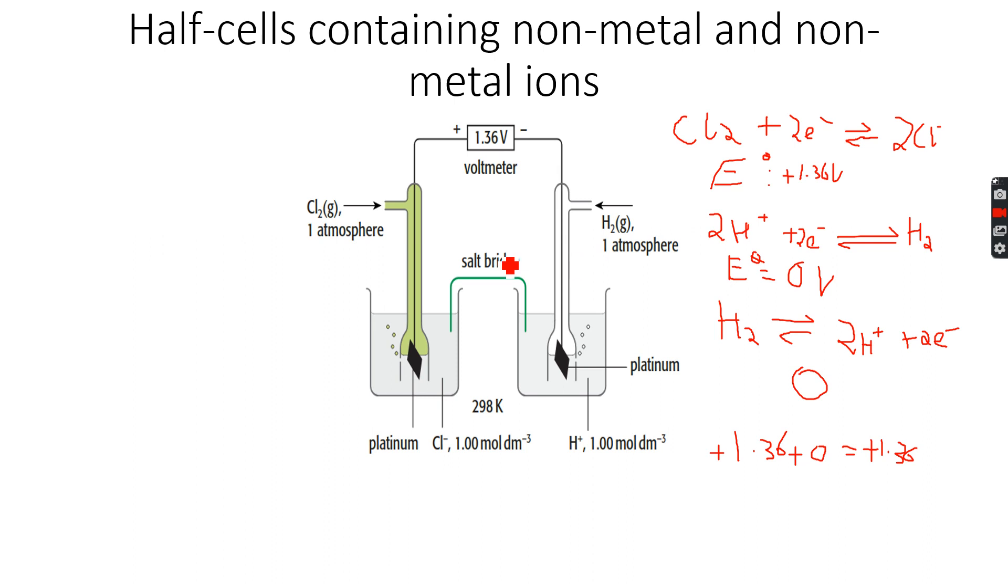Now you can see that whenever the standard hydrogen electrode is the other half cell, what we get on the voltmeter is nothing but the standard electrode potential of whatever is being tested against the half cell. And the negative sign here and positive sign here because zero is smaller than +1.36.